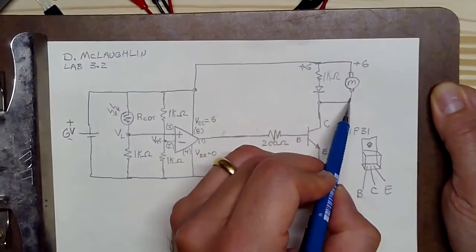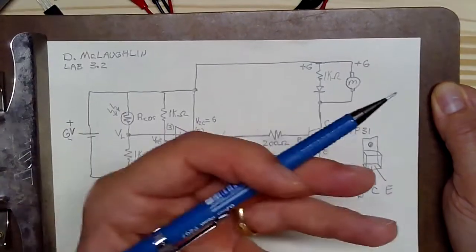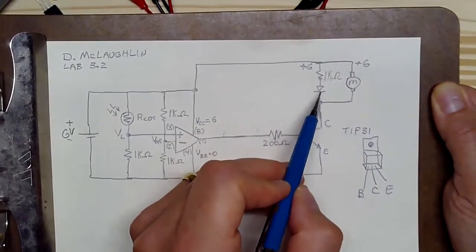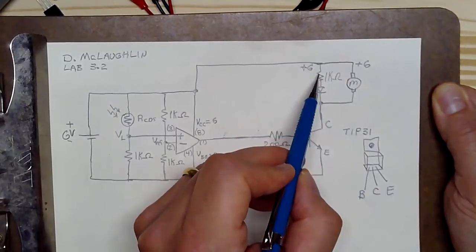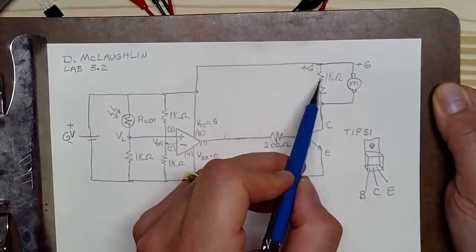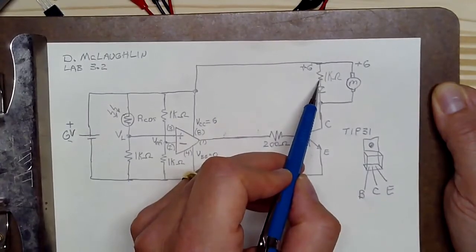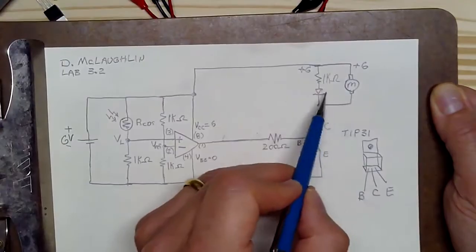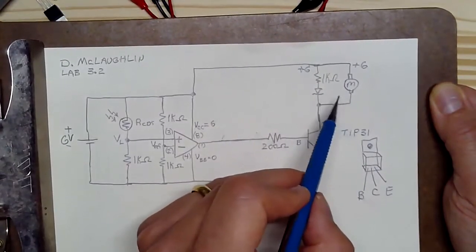And then we have the other terminal. If you ground that, that motor will run. In parallel with the motor, we have a resistor and an LED. One terminal of that resistor is connected to six volts. And then we have the anode, which is the long wire of the LED, and then the cathode. So we have these two indicator circuits.